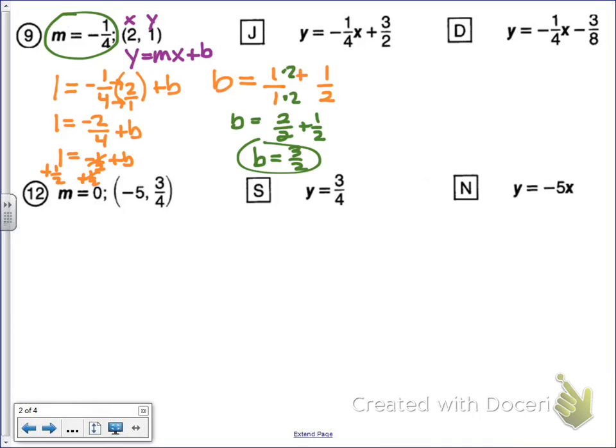Using my y-intercept and my slope, my equation is y equals negative one-fourth x, because negative one-fourth is my slope, and then plus the y-intercept, positive three over two, which matches J.